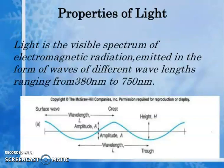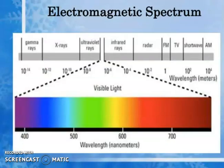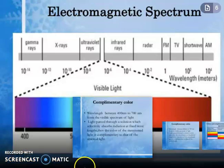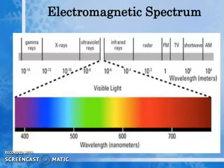Properties of light: light is the visible spectrum of electromagnetic radiation emitted in the form of waves of different wavelengths ranging from 380 nanometers to 750 nanometers. The electromagnetic spectrum for visible light has wavelengths starting from 400 to 700 nanometers.